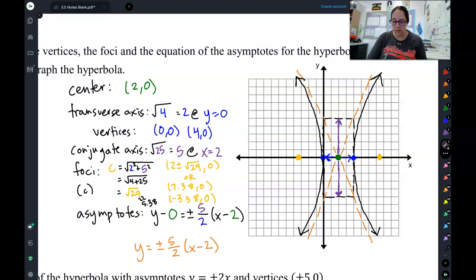Last thing I then needed to find were my foci, which is the transverse squared plus the conjugate squared, got square root of 29, which is about 5.38. I went side to side, so that those points would stay inside the branches of my hyperbola. And you can write that as this 2 plus and minus square root of 29. Or you could just do it as the decimal, that's at 7.38, that's at negative 3.38.